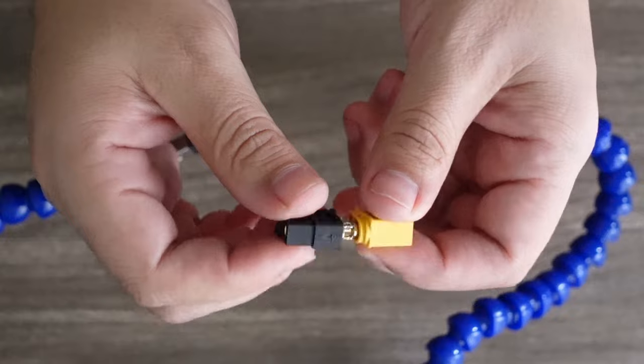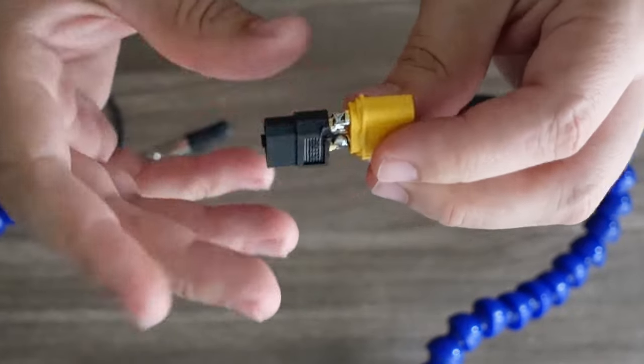Now you should have something that looks like this. Should have a nice strong joint because we soldered it on both sides.